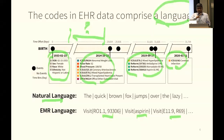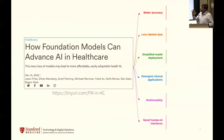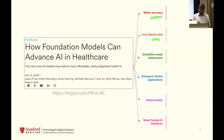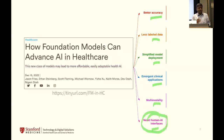In healthcare, we believe there's a bunch of value that foundation models — and I intentionally am using the word foundation model, not just language model — can have. We laid them out in a blog post on the HIGH website. These are the six: better accuracy, less label data, simplified deployment, emergent applications, dealing with multimodal applications, and novel human-AI interfaces like ChatGPT.